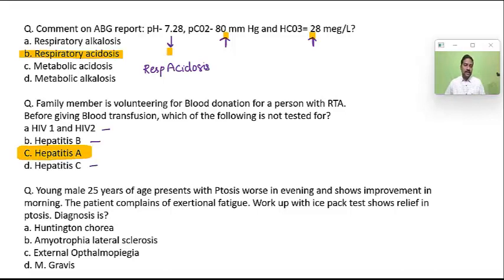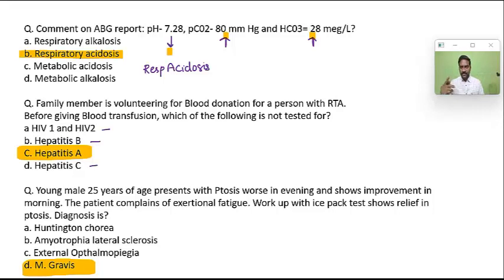A young male, 25 years of age, presents with ptosis worse in the evening and improvement in the morning. The patient complains of exertional fatigue. Workup with ice pack test shows relief in ptosis. All this is suggestive of myasthenia gravis. In myasthenia gravis, the ice pack by an indirect mechanism can increase the availability of acetylcholine and improve the disease.